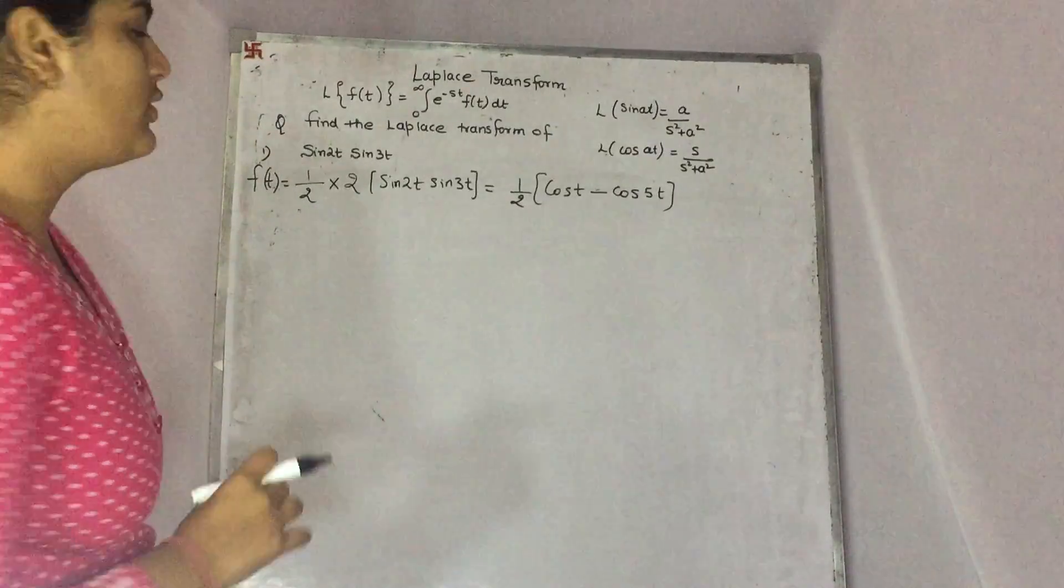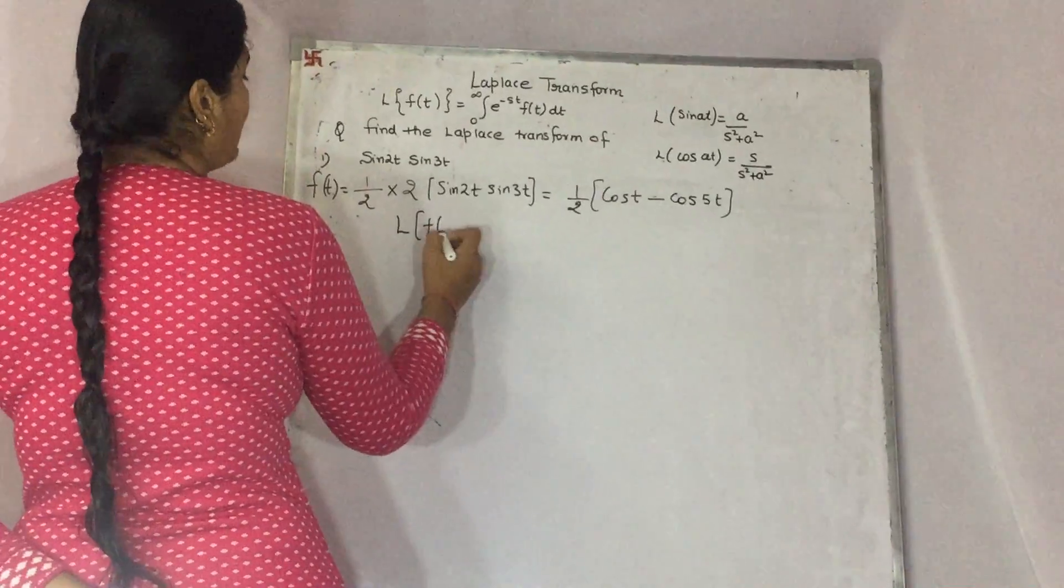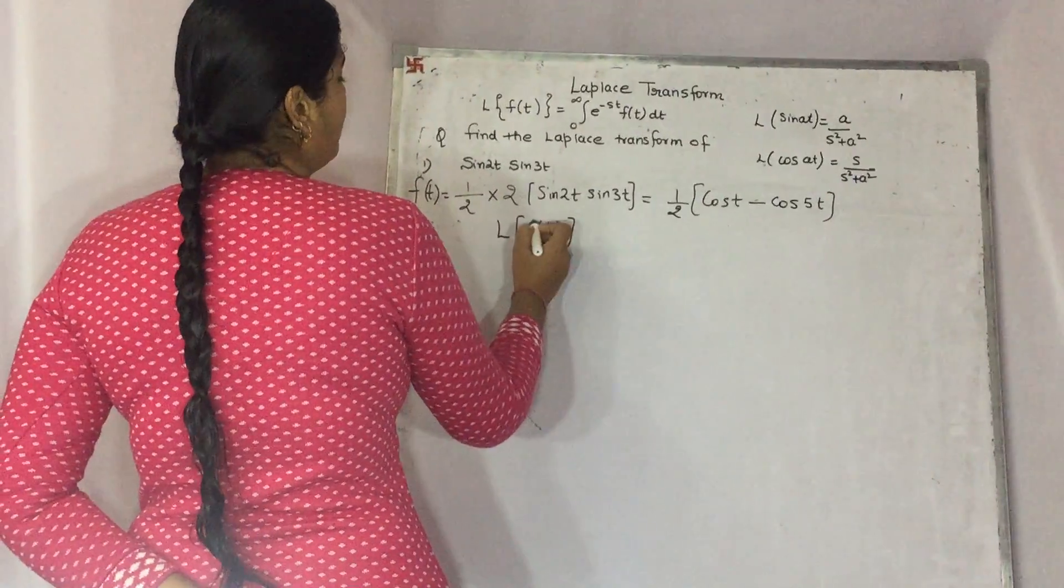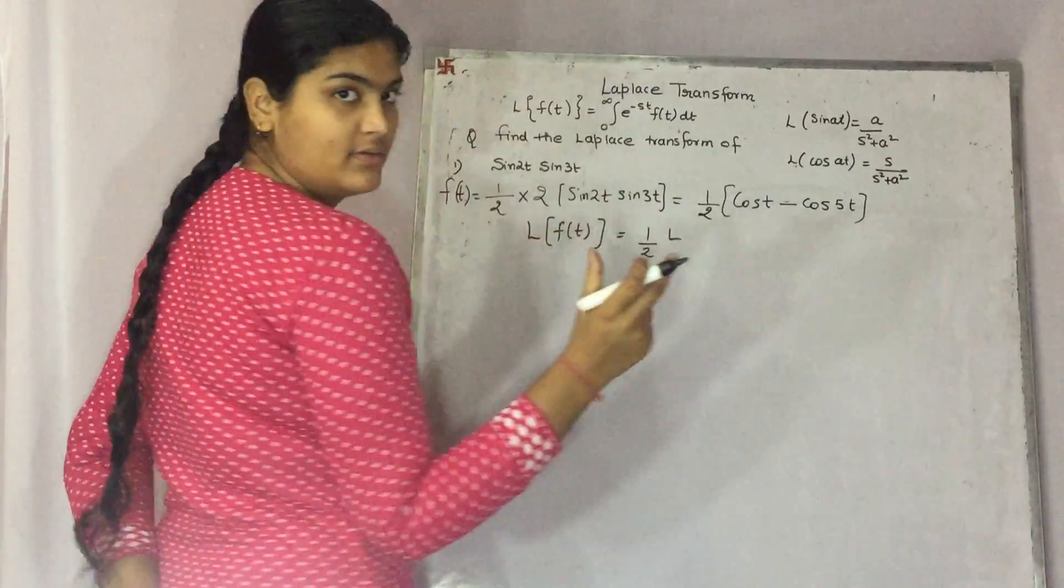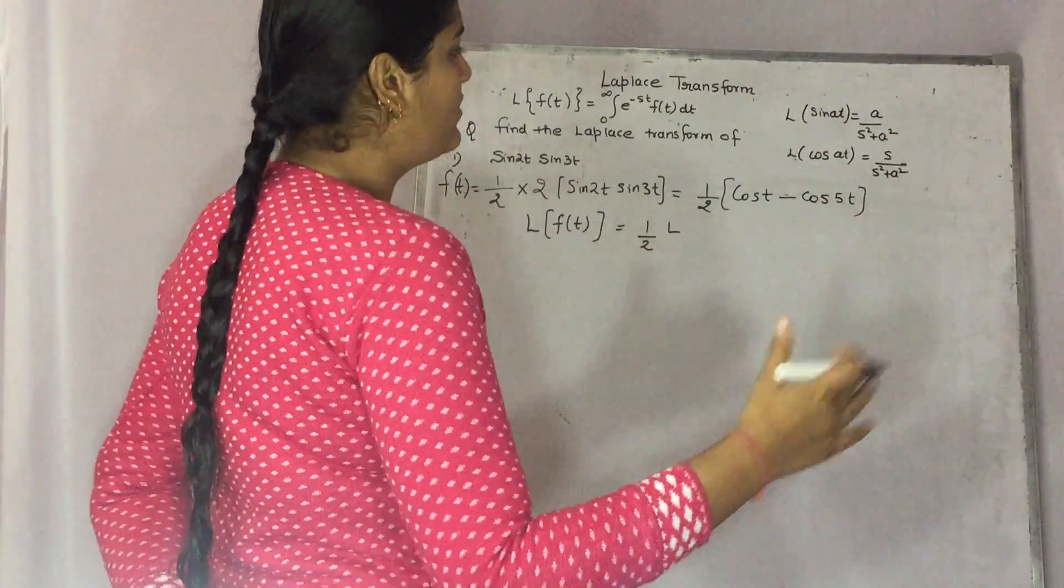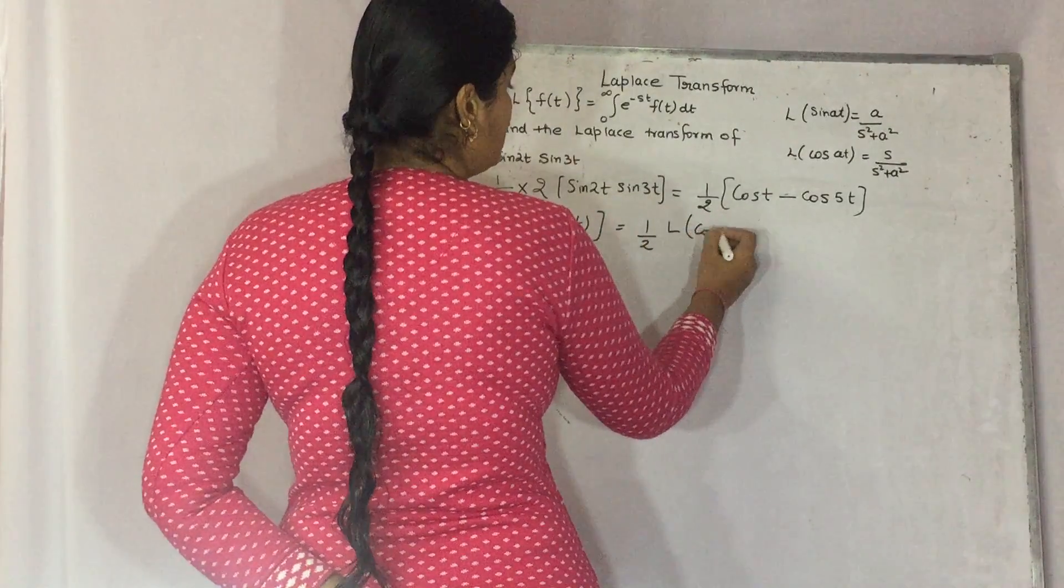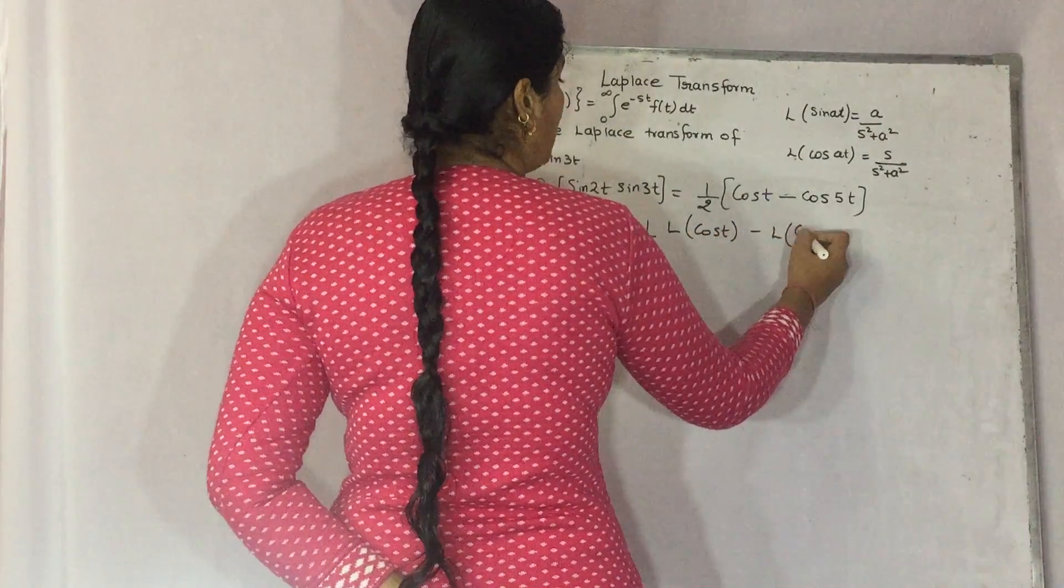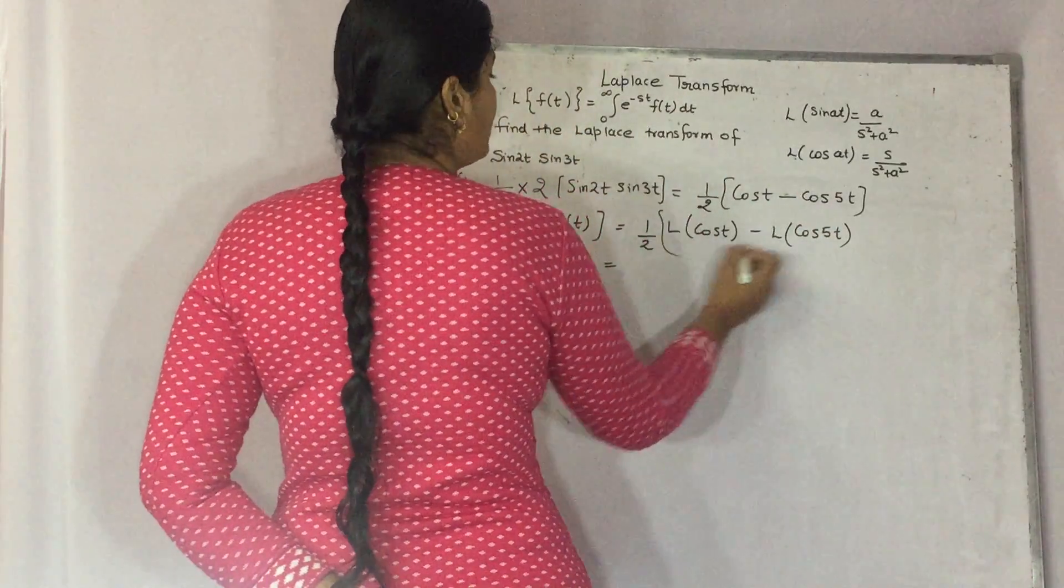Then what will you get? Laplace transform of f(t) will become half. Linearity distributes the Laplace into the whole equation: Laplace transform of cos t minus Laplace transform of cos 5t. In this way you will get it.